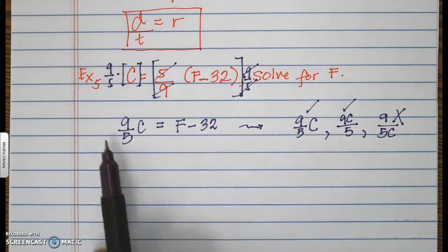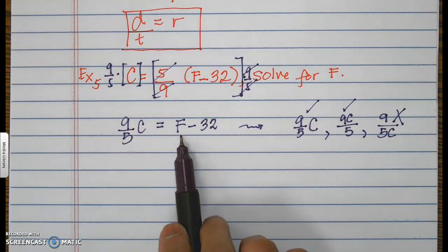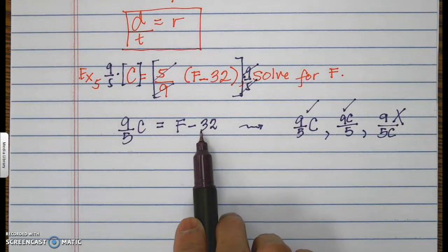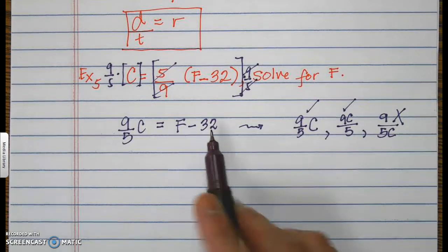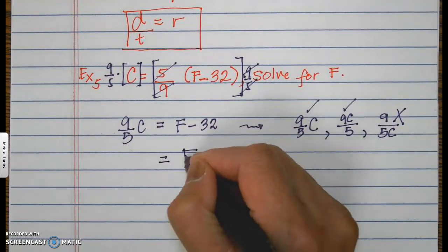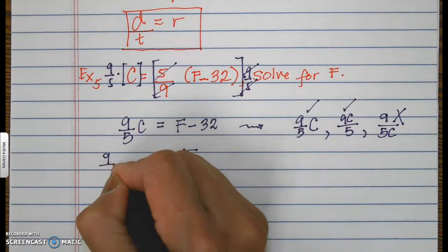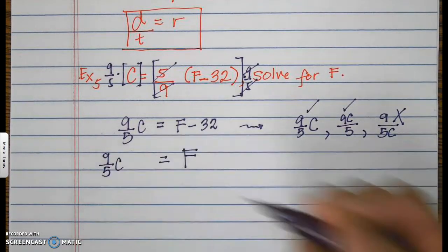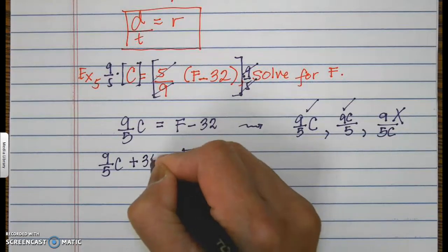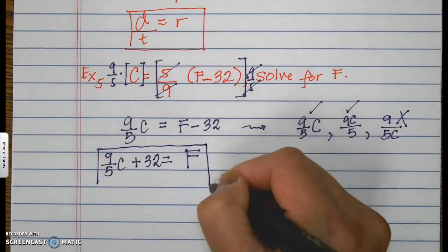Now going back: to solve for f, we need to remove the negative 32 and move it to the other side. Therefore, f equals 9 over 5 times c plus 32. That is your final answer.